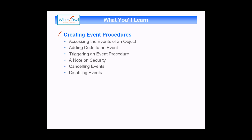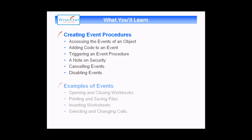We'll start by talking about how you can access the events of an object, sticking to workbooks and worksheets to begin with. We'll then talk about how you add the code to an event procedure and how you can make that code run by triggering the event it's attached to. We'll also mention security, and a couple of useful things you can do in terms of cancelling and disabling certain events.